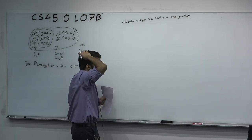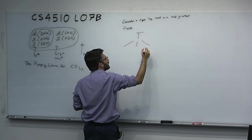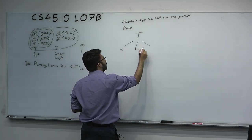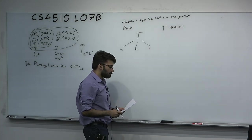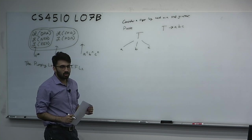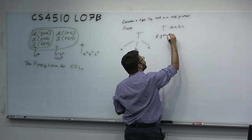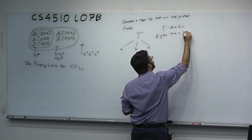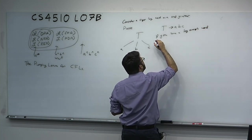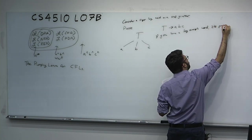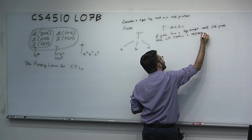If you consider a parse tree — you have some non-terminal and draw lines to whatever the production goes to — I claim that if you have a long enough word on a small grammar, some non-terminal is repeated twice on a path in the parse tree. If you have a long enough word, its parse tree will contain a repeated non-terminal.